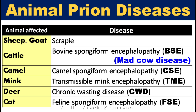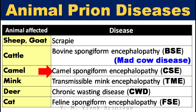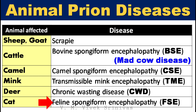These are the prion diseases affecting different species of animal: scrapie in sheep and goat, bovine spongiform encephalopathy also called mad cow disease, camel spongiform encephalopathy, transmissible mink encephalopathy, chronic wasting disease in deer, and feline spongiform encephalopathy.